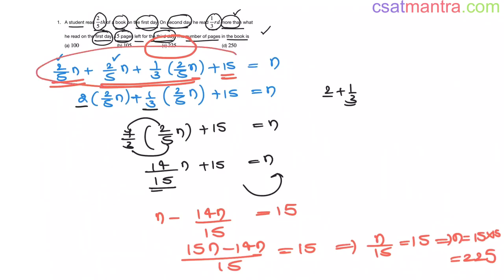Okay. So, total number of pages read on these 3 days is equal to n. So, by solving this equation you will be getting the value of n my friends. Okay. And don't forget this. You must assume the things which are not known. Okay. There won't be any problem in that.